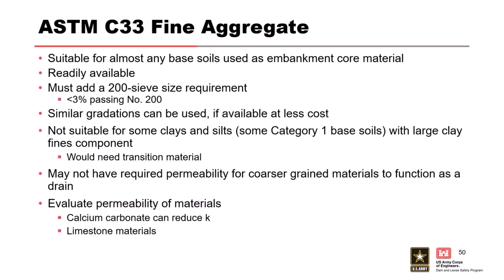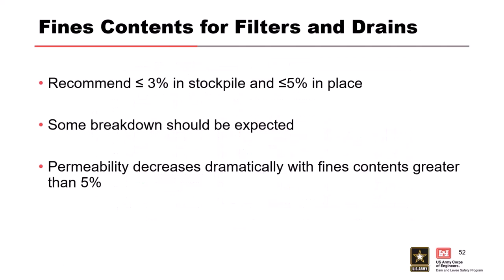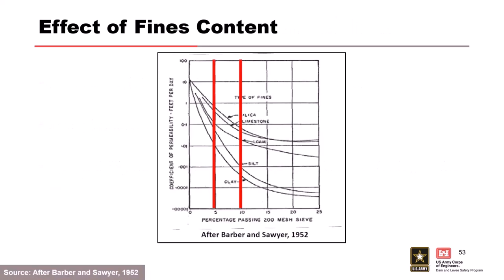One thing to note: some clays have a really high clay fraction that C33 does not work with, and you have to add a transition material, which is a challenge because that transition material is really fine sand with insufficient permeability. You've got to make sure you have enough confining stress — a berm over it — to force water through the transition into the filter and drainage materials. Stockpile fines content of 3%, up to 5% in place. My experience with good quartz sand is it's usually less than 1% breakdown. But a 5% increase in fines results in an order of magnitude decrease in hydraulic conductivity, so it doesn't take much fines to mess up a filter.